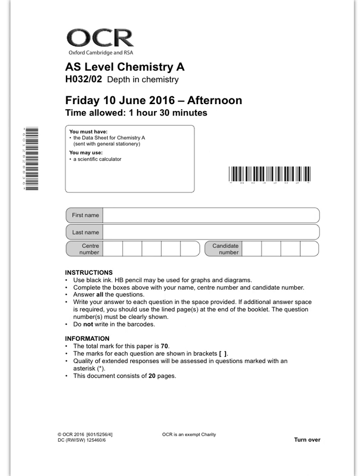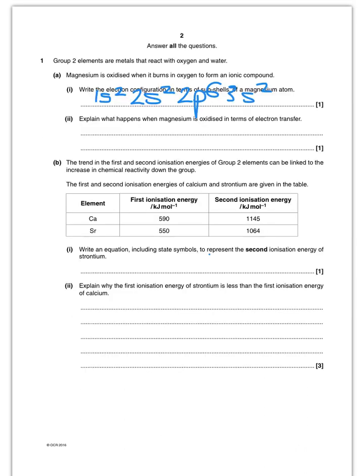So today we're going through depth and chemistry from June 2016. The first question is relatively straightforward. It asks me for the electronic configuration of magnesium. If you look up in your periodic table, magnesium's got an atomic number of 12. Therefore I need to put 12 electrons into my orbitals and you build them up from the lowest in energy which is 1s2, 2s2, then 2p6, 3s2.